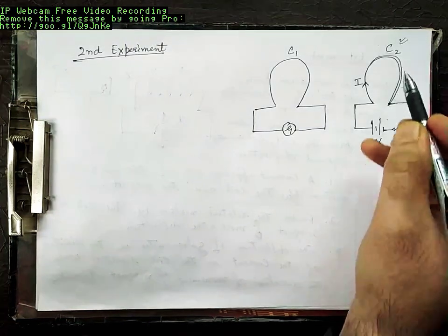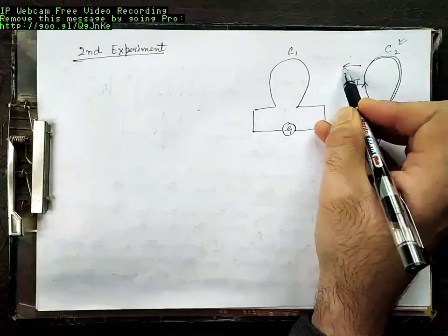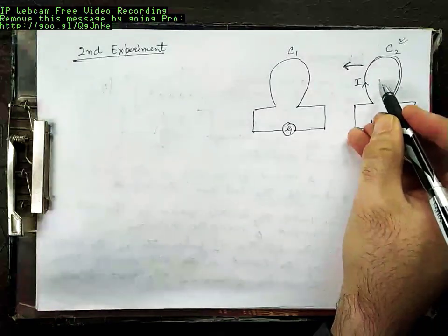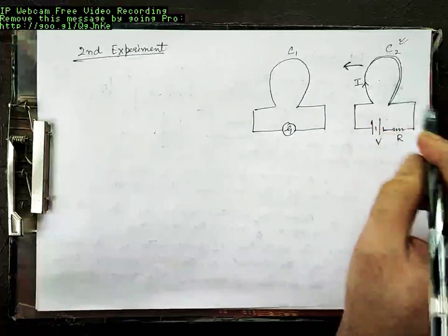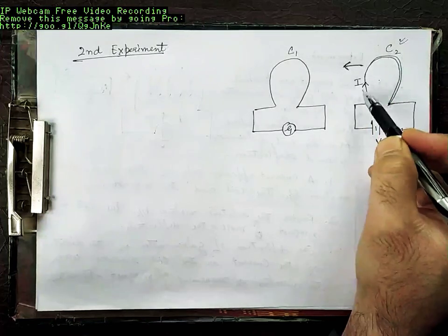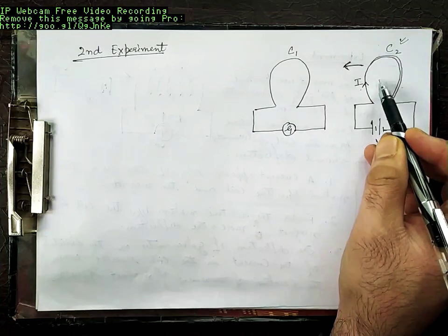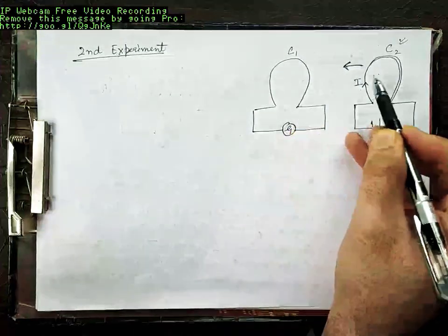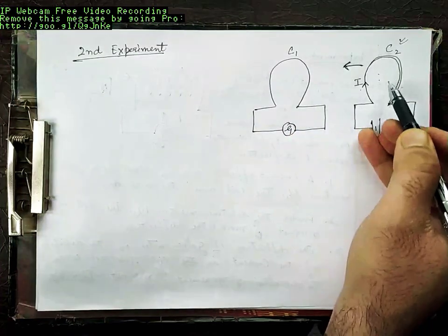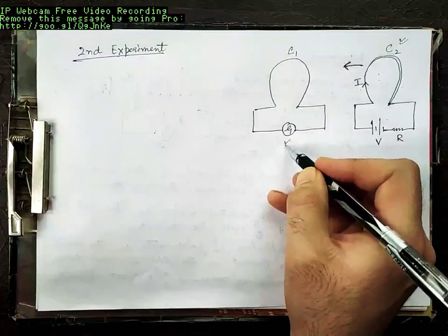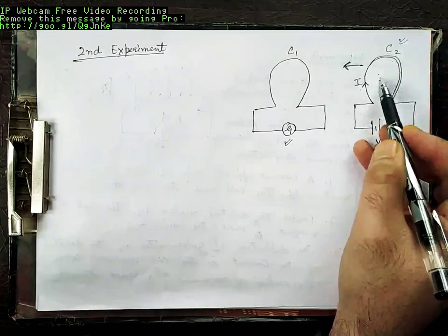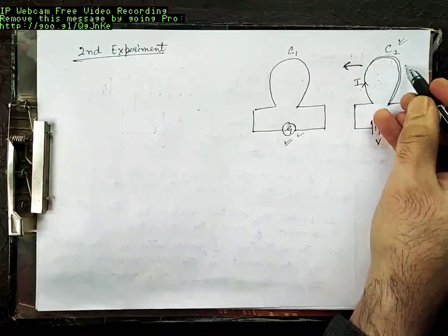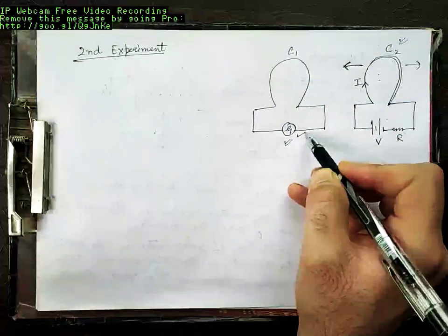When coil C2 is pushed towards coil C1, draw the analogy with the previous experiment: in that experiment we moved a bar magnet towards the coil; here we have a current-carrying coil — which also behaves as a magnet — being pushed towards coil C1. What was observed is that this galvanometer showed deflection. When the current-carrying coil C2 was pulled away from coil C1, the galvanometer again showed deflection but in the opposite direction.